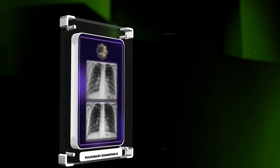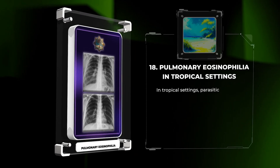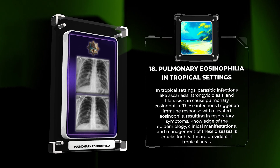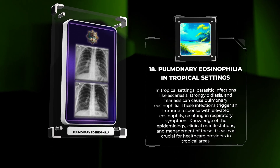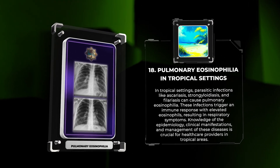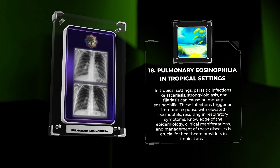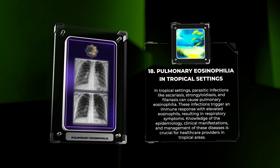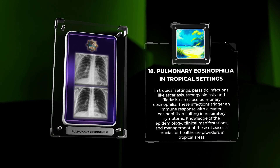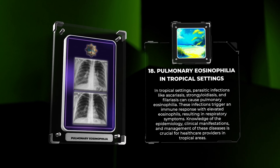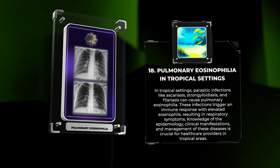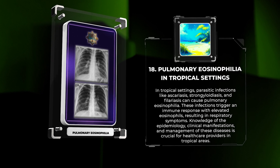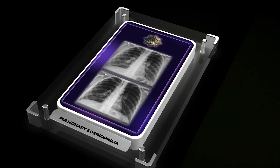In tropical settings, parasitic infections like ascariasis, strongyloidiasis, and filariasis can cause pulmonary eosinophilia. These infections trigger an immune response with elevated eosinophils, resulting in respiratory symptoms. Knowledge of the epidemiology, clinical manifestations, and management of these diseases is crucial for healthcare providers in tropical areas.